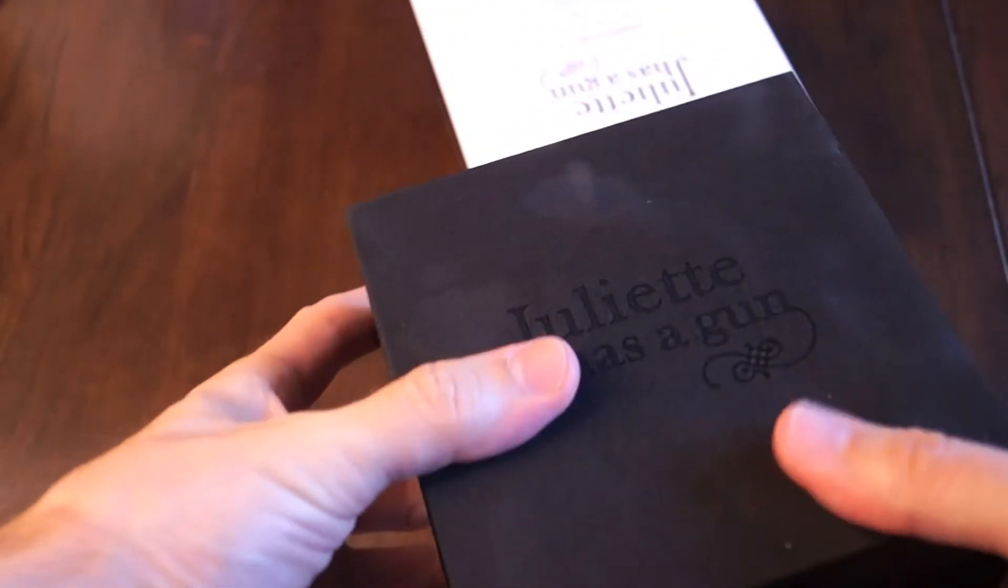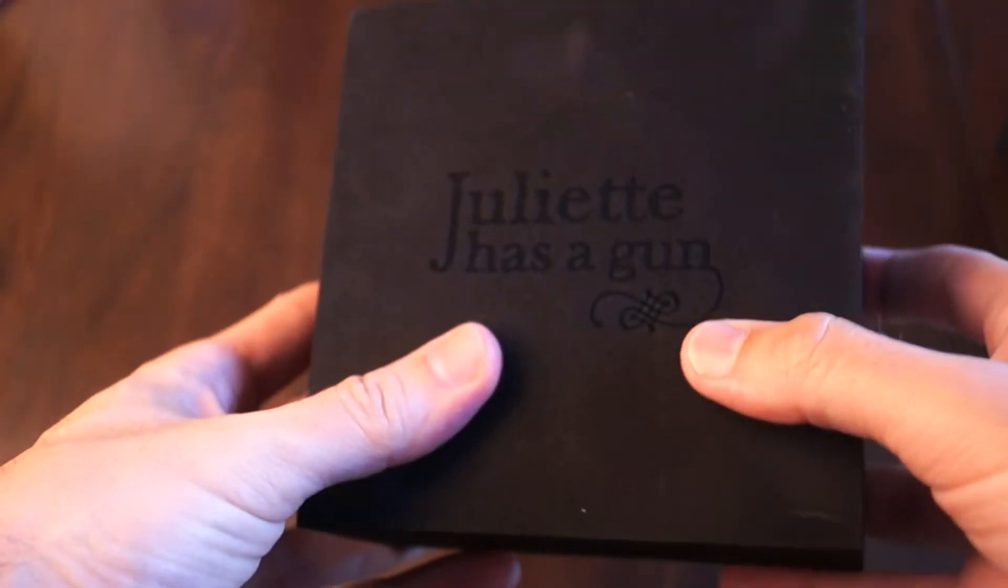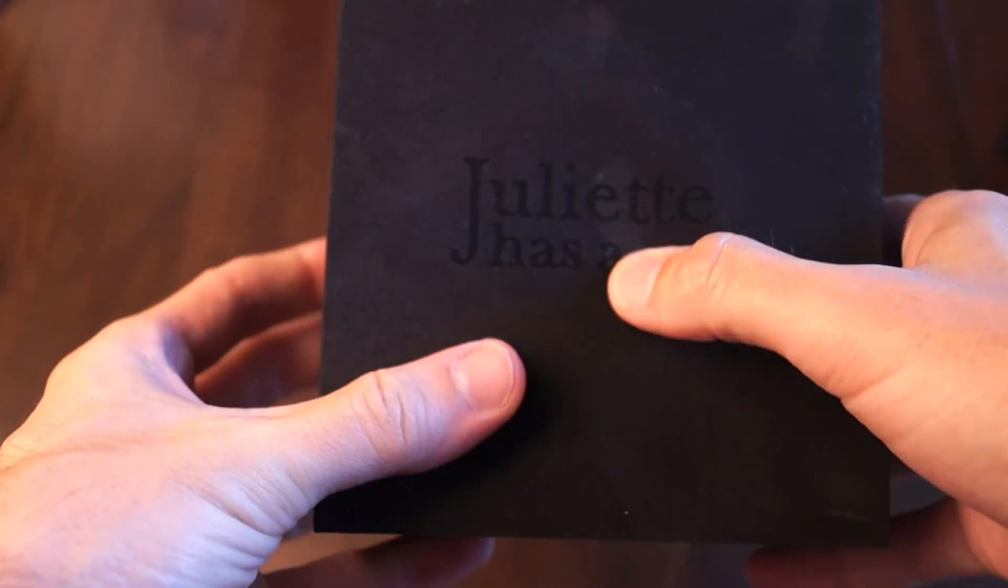And then it opens, and this is kind of like a foam of sorts. You can see it says Juliet Has a Gun on the top there. Pretty neat. And then this just opens up, and there it is. Pretty cool. Very utilitarian, simple box design. Love it.